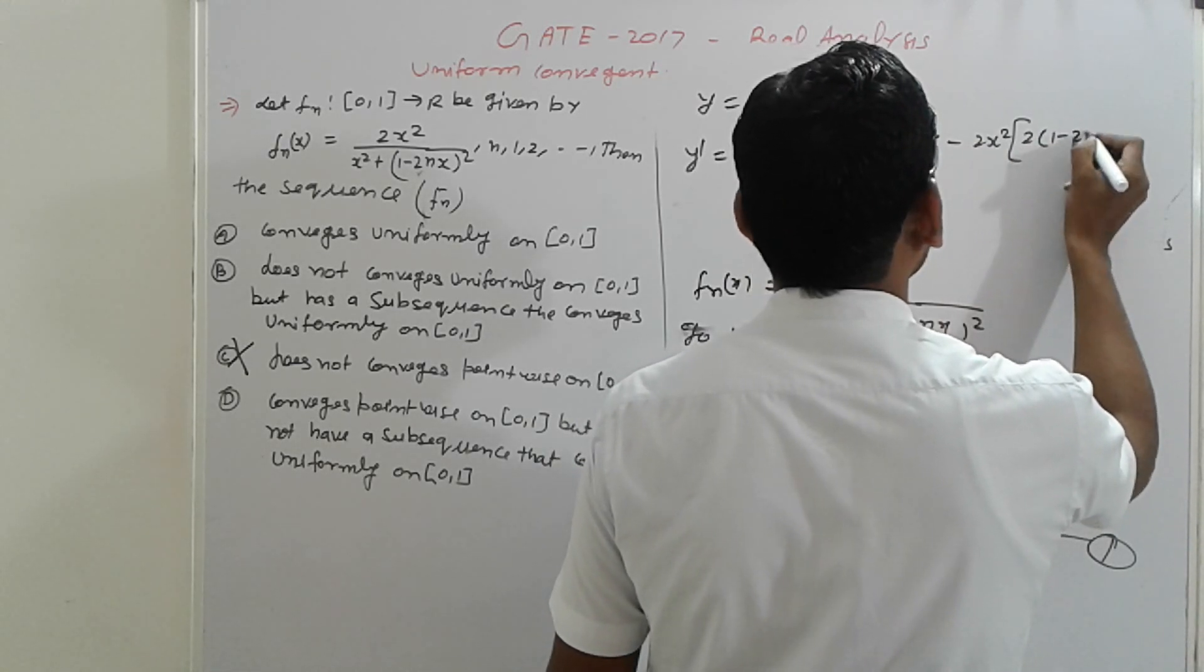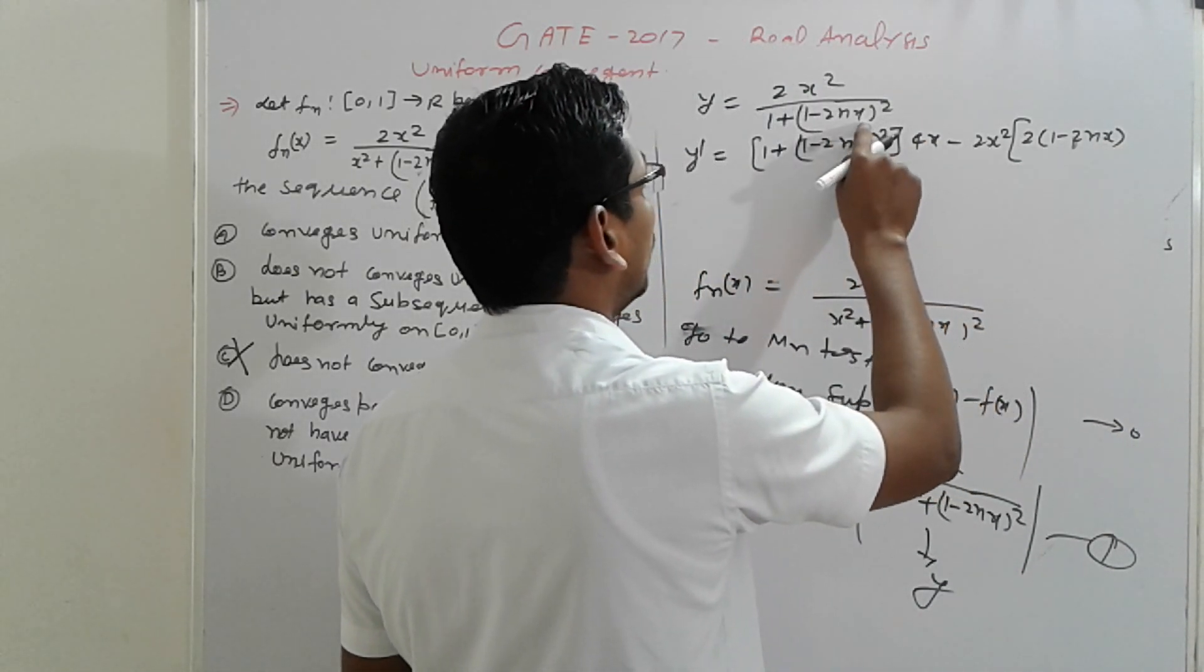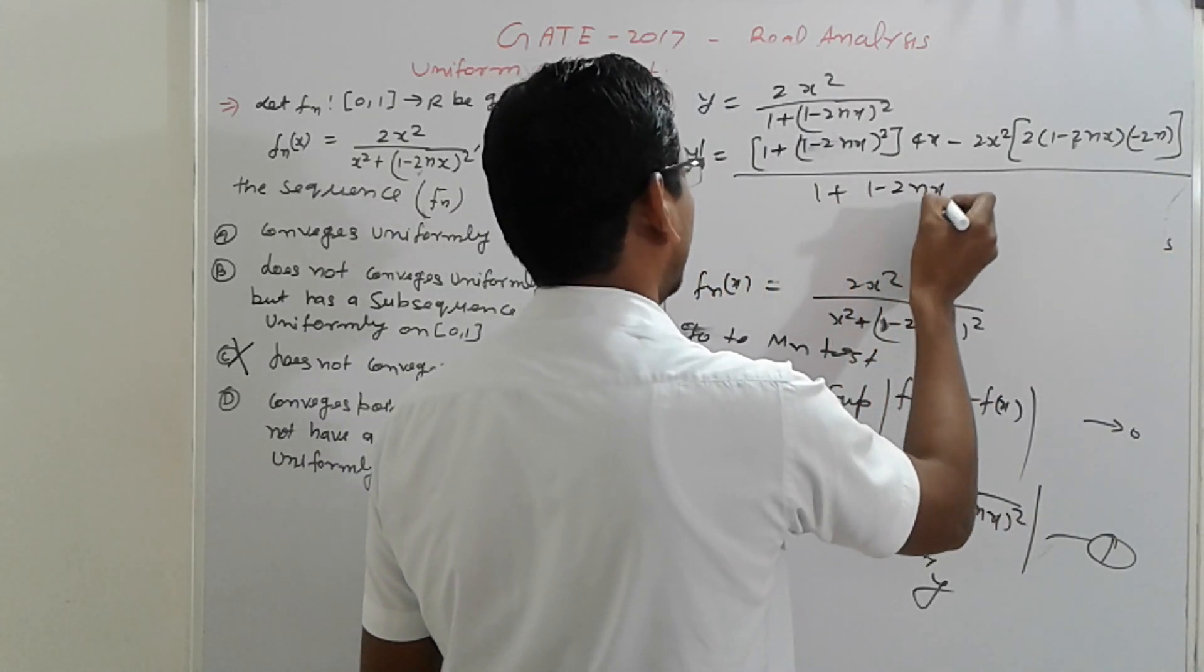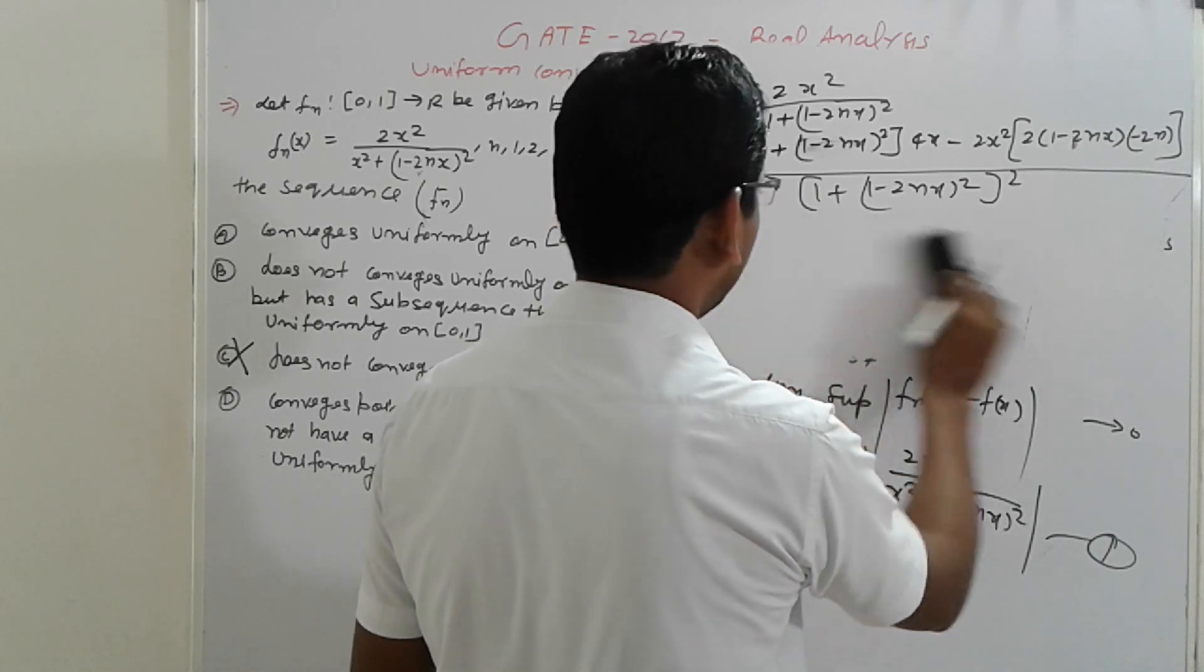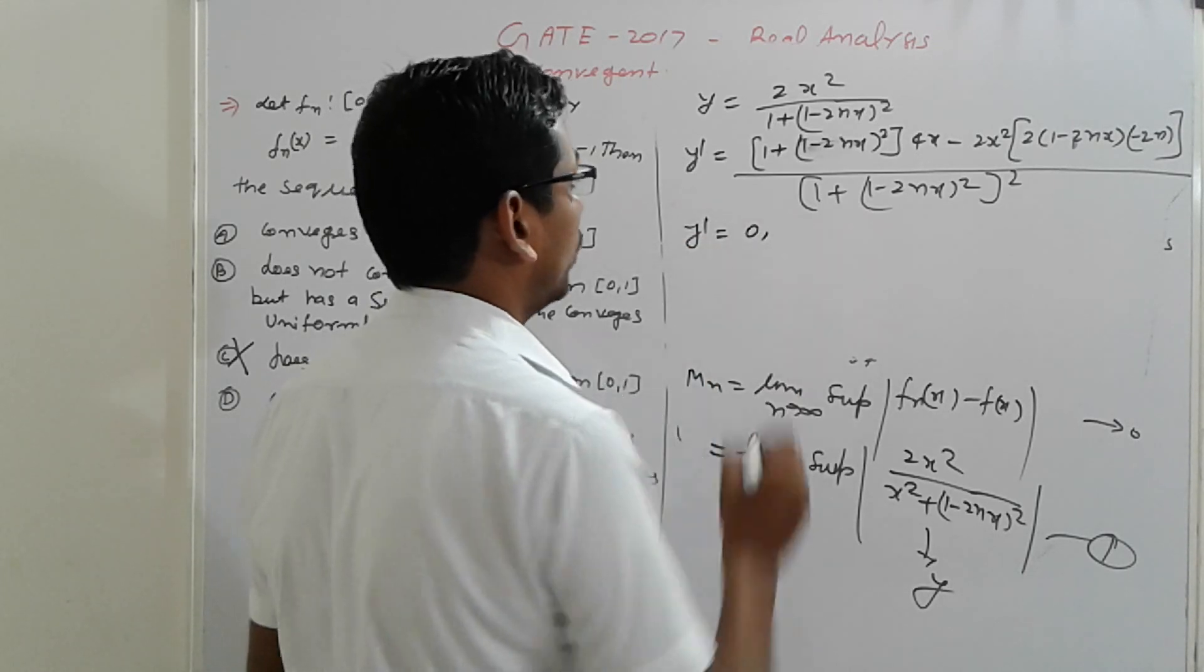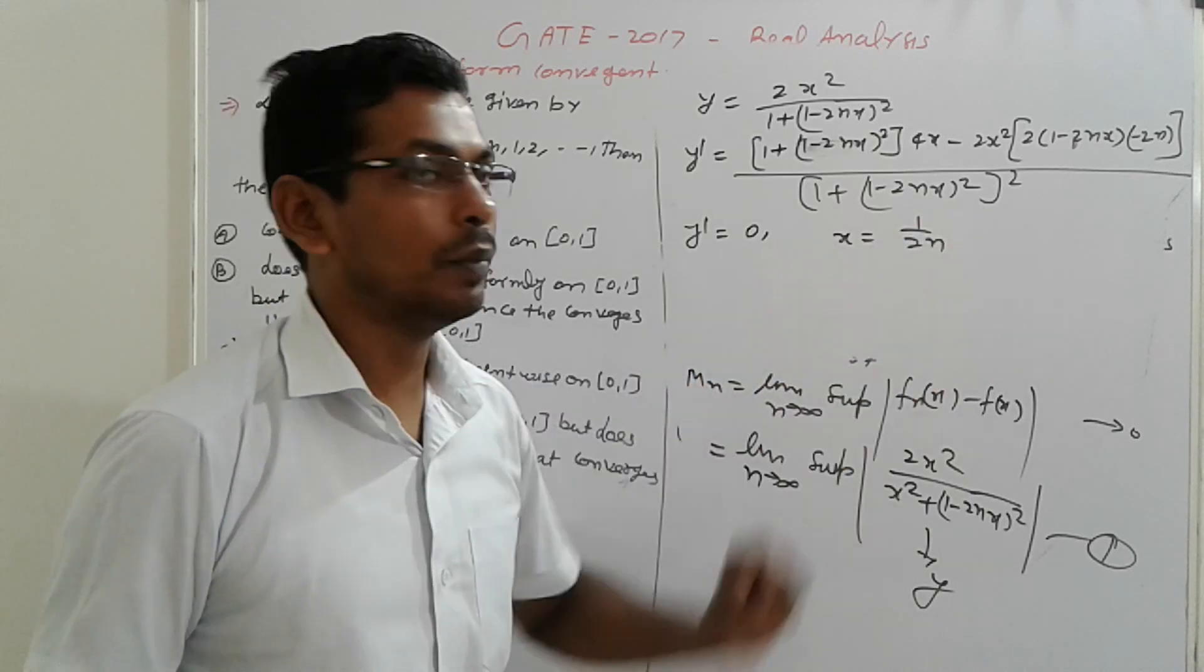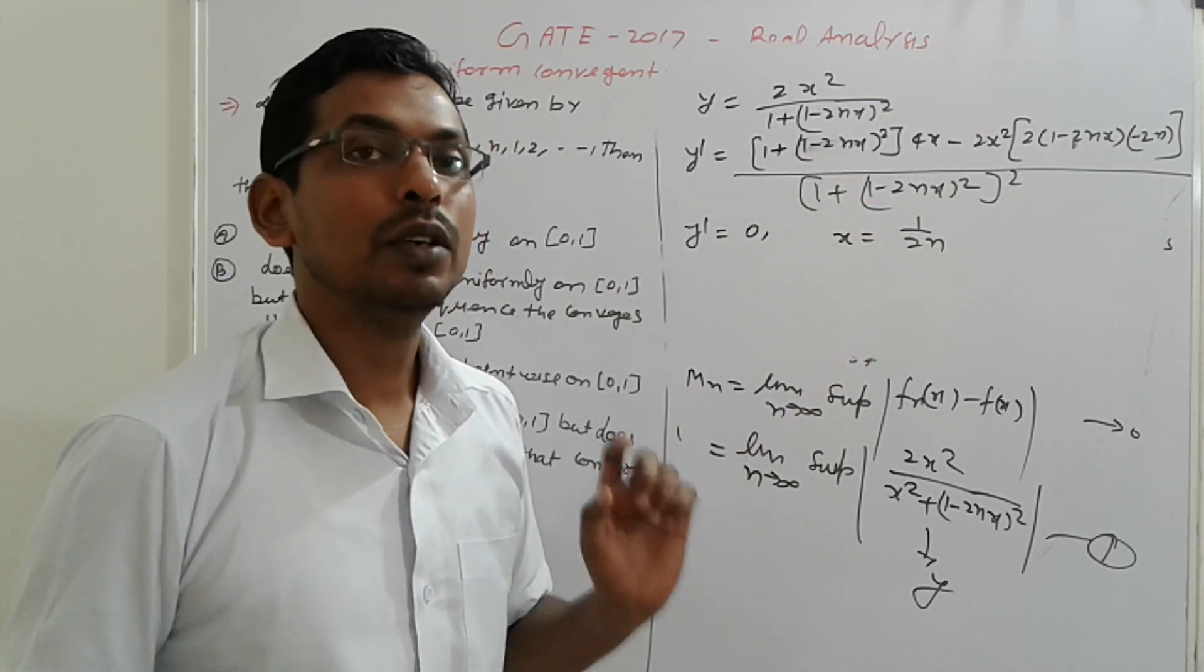Whole square into 4x derivative is minus 2x² inside derivative of this is 0 and minus 2n, 1 minus 2nx into this with respect to x minus 2n, divided by (1 - 2nx)² whole square. Here full and final, simplify this totally, y' equal to 0 put simplify, so finally we find this is x is equal to 1/(2n).